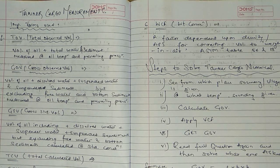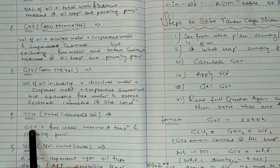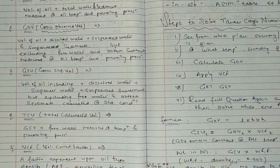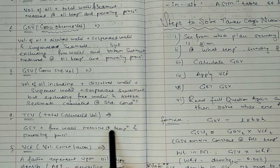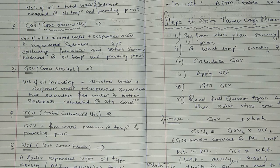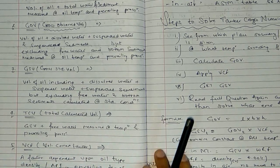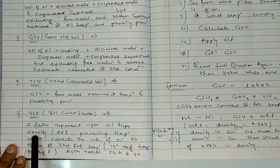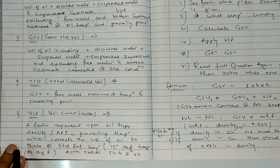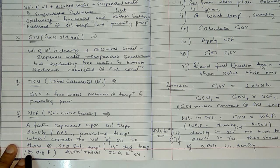Next is TCV — Total Calculated Volume. In TCV, GSV plus free water measured at current temperature and prevailing pressure is calculated. We also need VCF — Volume Correction Factor — a factor dependent upon oil type, density, and API at prevailing temperature, which corrects the volume of oil to the standard reference temperature of 15 degrees Celsius or 60 degrees Fahrenheit.